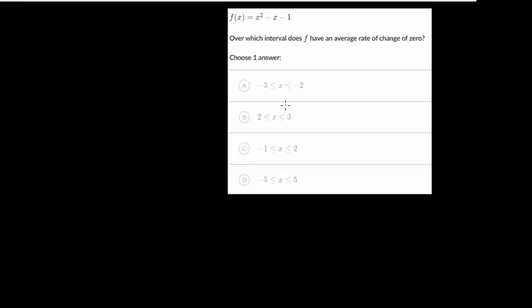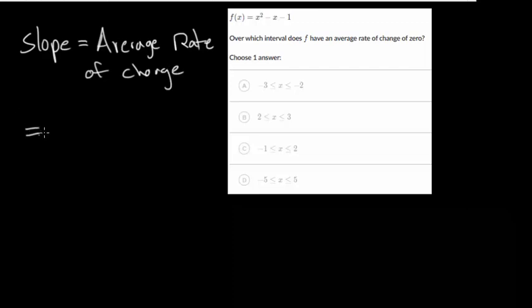We're going to be given two points in each of these cases, and we're looking for an average rate of change of 0. And remember, the average rate of change is just the slope of the line between these two points. That formula is just going to be the difference in the y values divided by the difference in the x values from those two points.